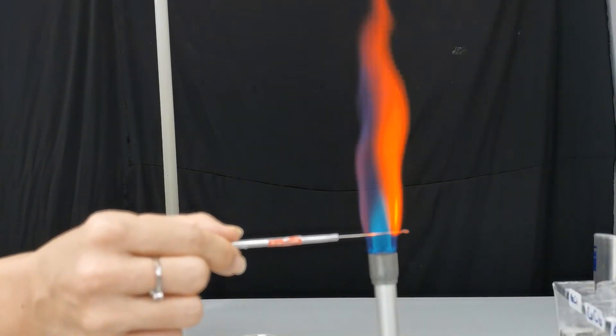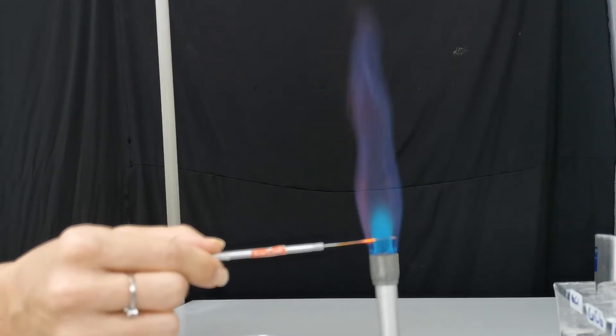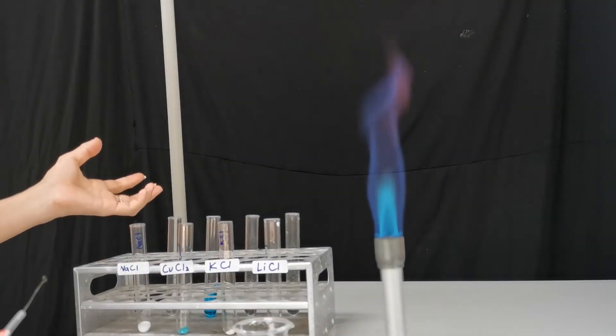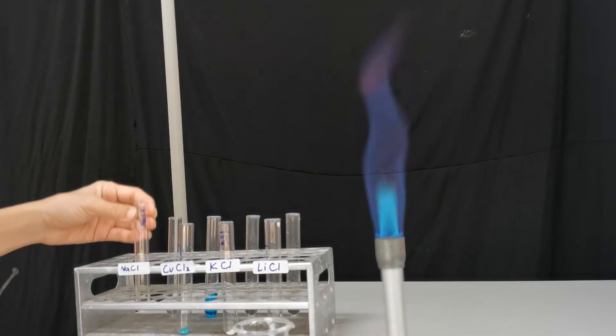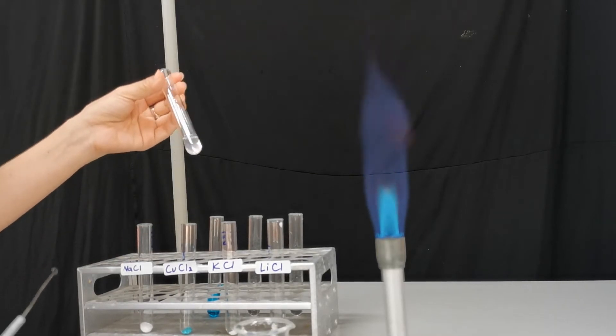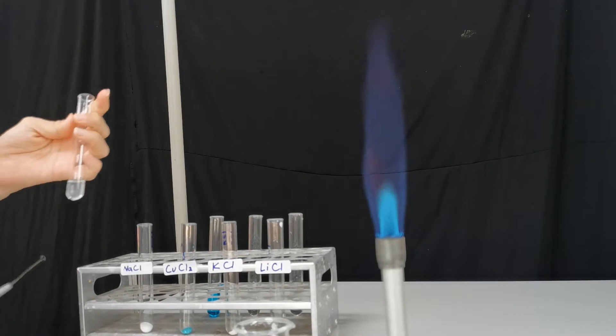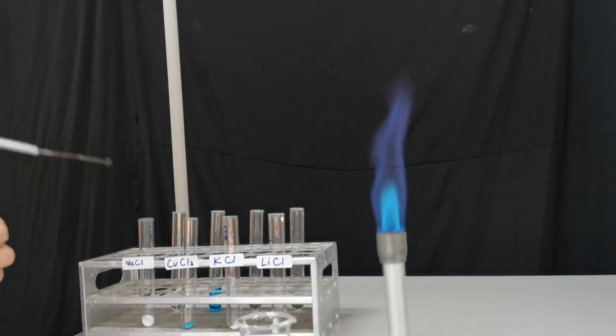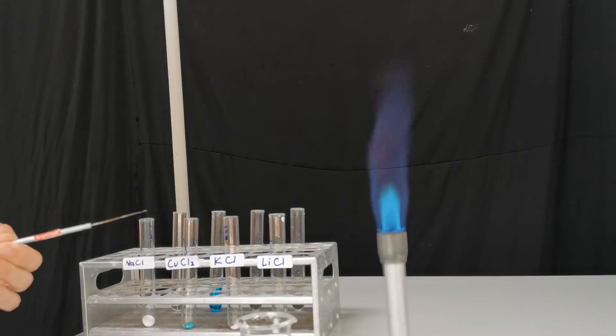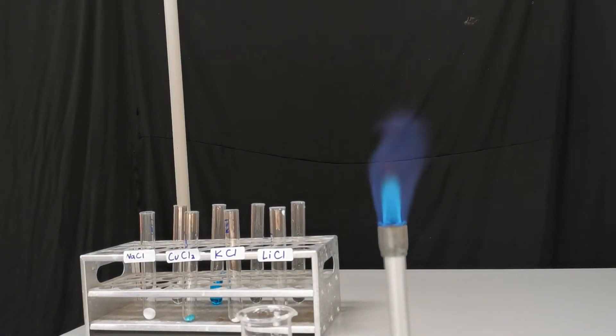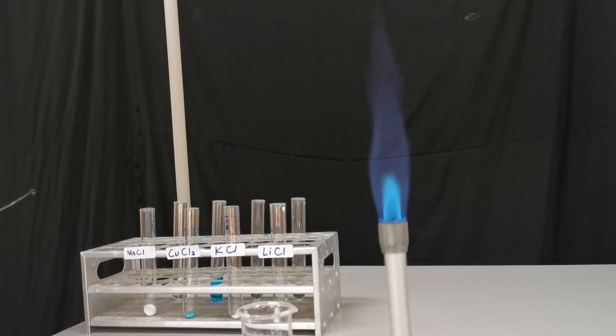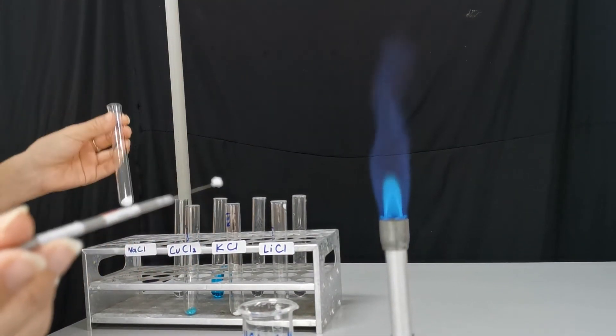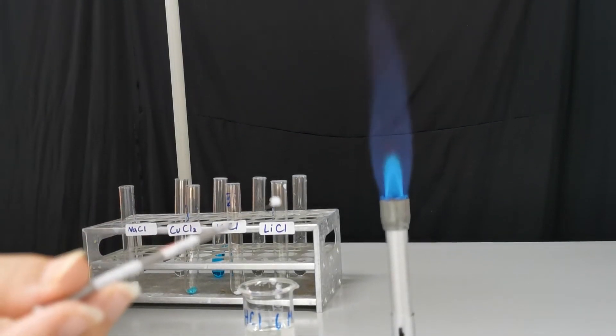Let's do our first test. I'm going to be using the solid sodium chloride and also the solution of sodium chloride. Since sodium chloride solid will not stick on the loop, I have to make the loop wet first. So I'm going to use distilled water to wet the loop. Now that the loop is wet, I can easily catch the sodium chloride crystal on it.